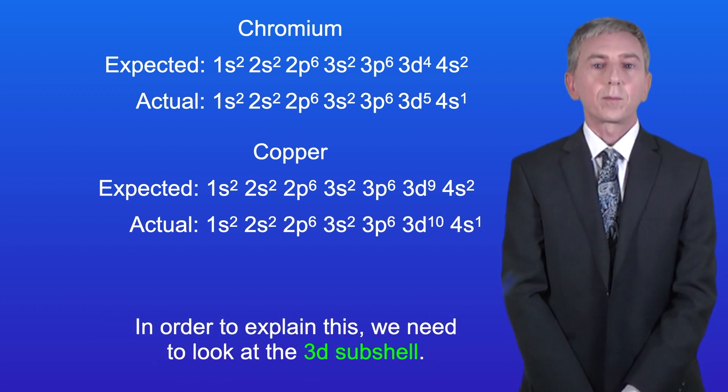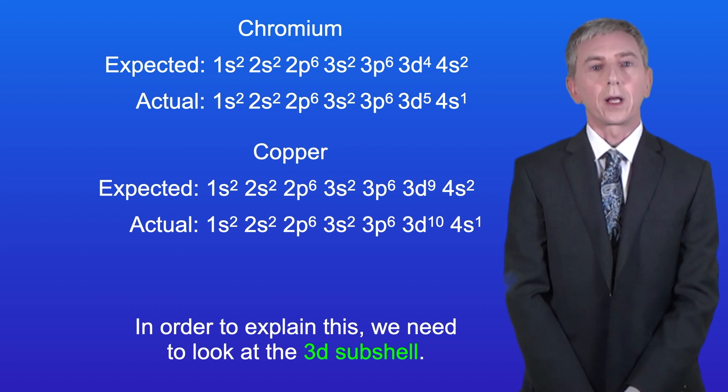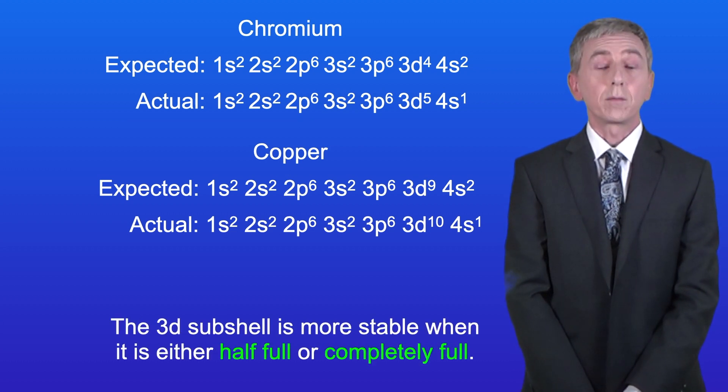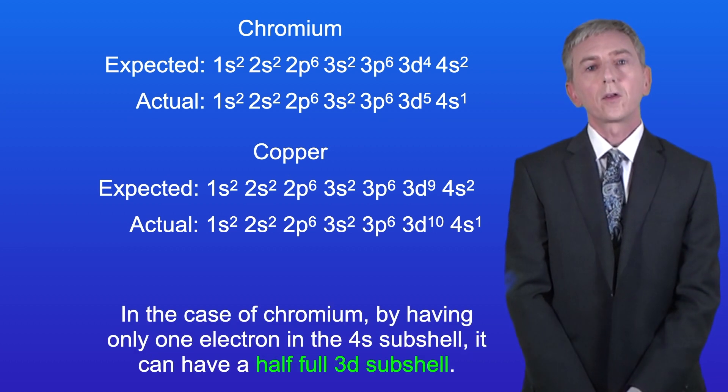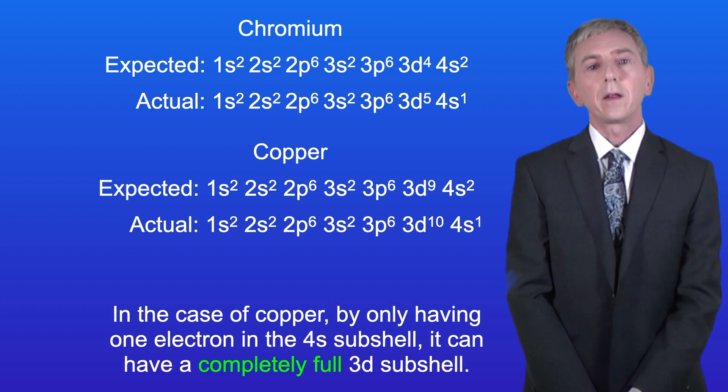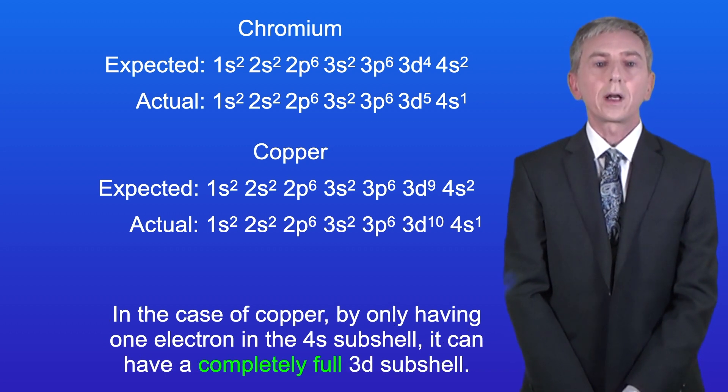Now, in order to explain this, we need to look at the 3d-subshell. The 3d-subshell is more stable when it's either half-full or completely full. So in the case of chromium, by having only one electron in the 4s-subshell, it can have a half-full 3d-subshell. And in the case of copper, by only having one electron in the 4s-subshell, it can have a completely full 3d-subshell.